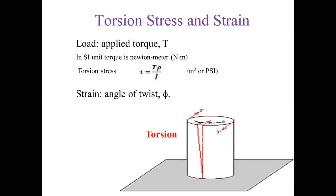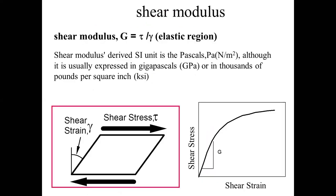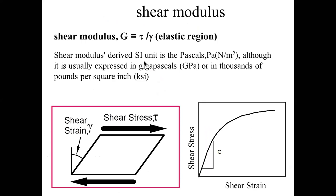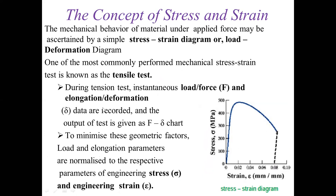The shear modulus is tau divided by gamma — shear stress divided by shear strain. We have covered torsional stress and strain. The concept of stress and strain should now be fairly familiar. Mechanical behavior actually depends more on the stress-strain diagrams.